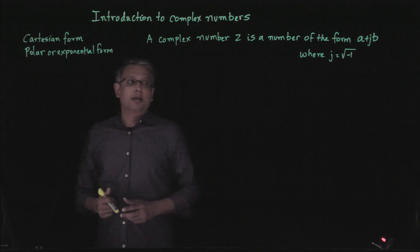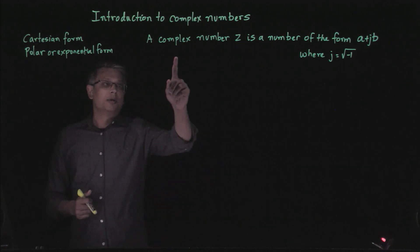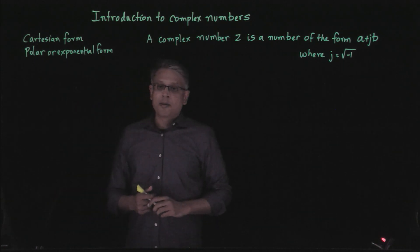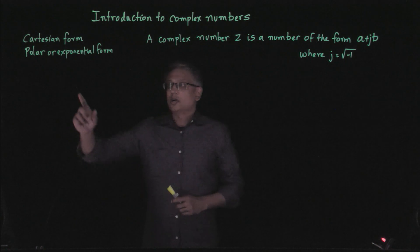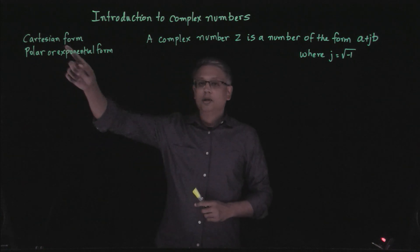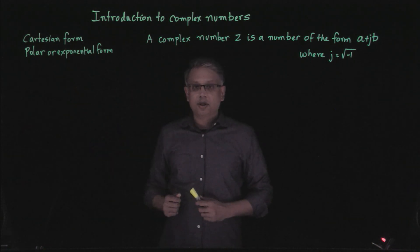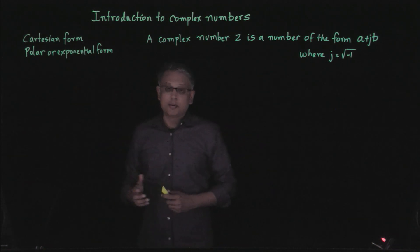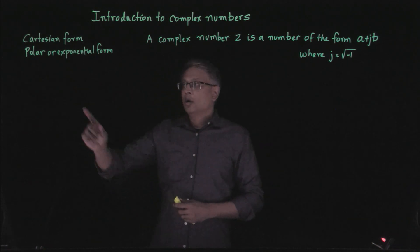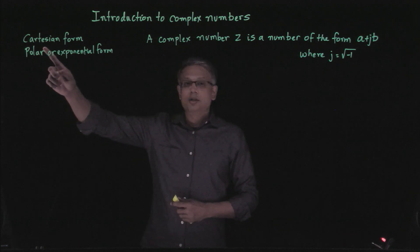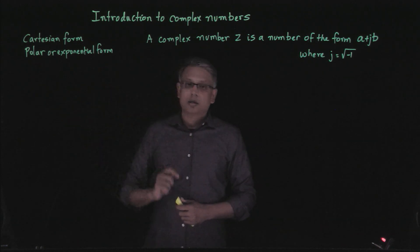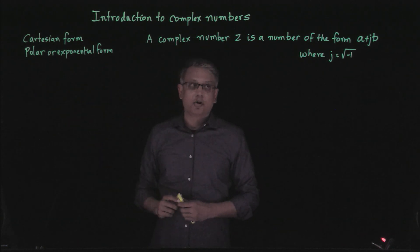In this lecture I'm going to talk about what a complex number is, and we're going to talk about two different representations of complex numbers that are commonly used, called the Cartesian form and a polar or exponential form.